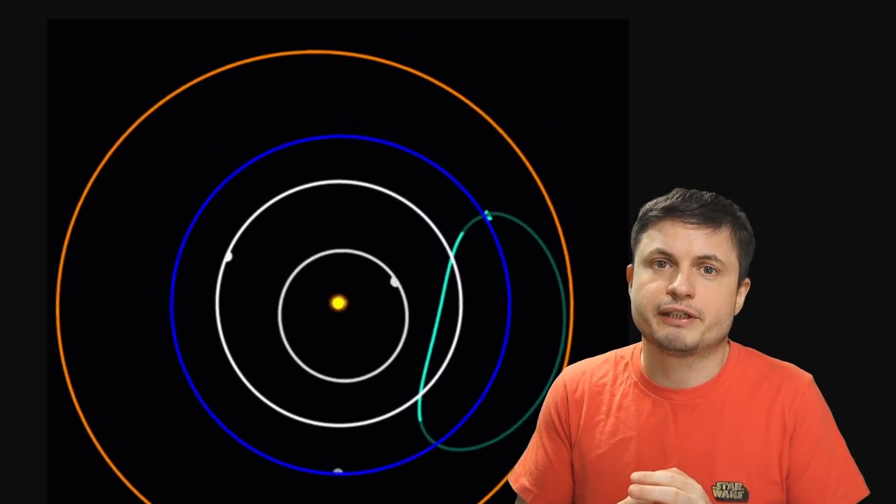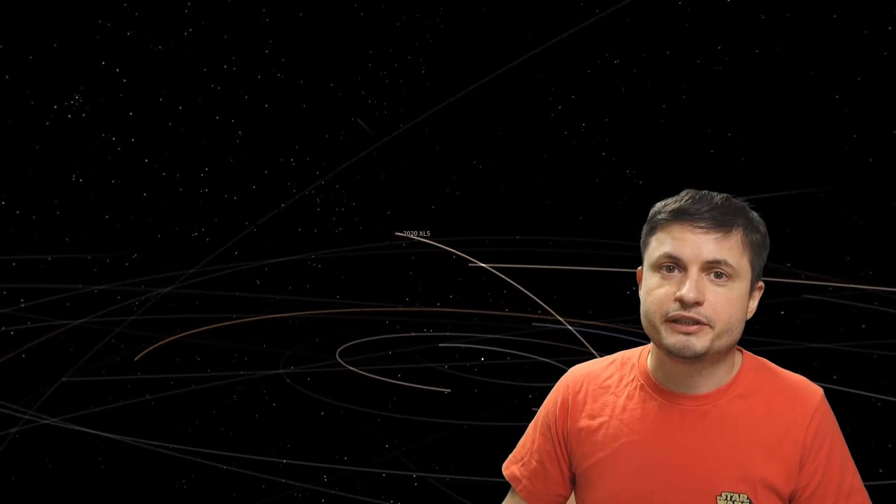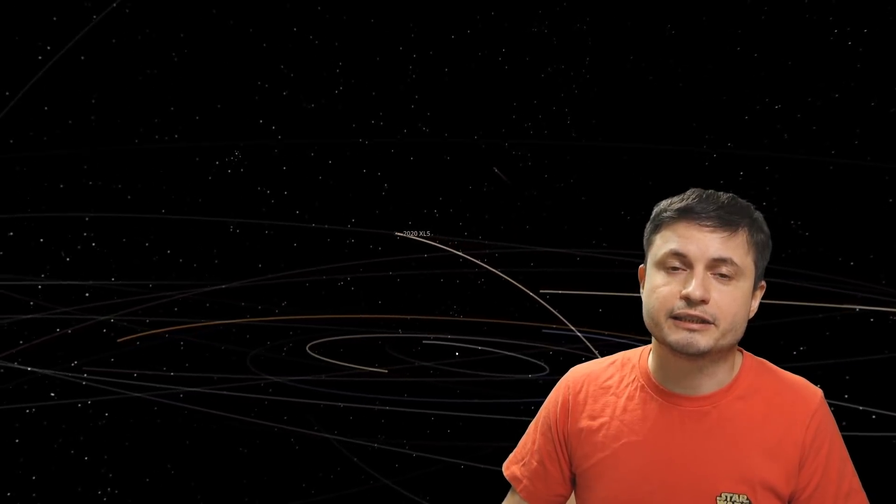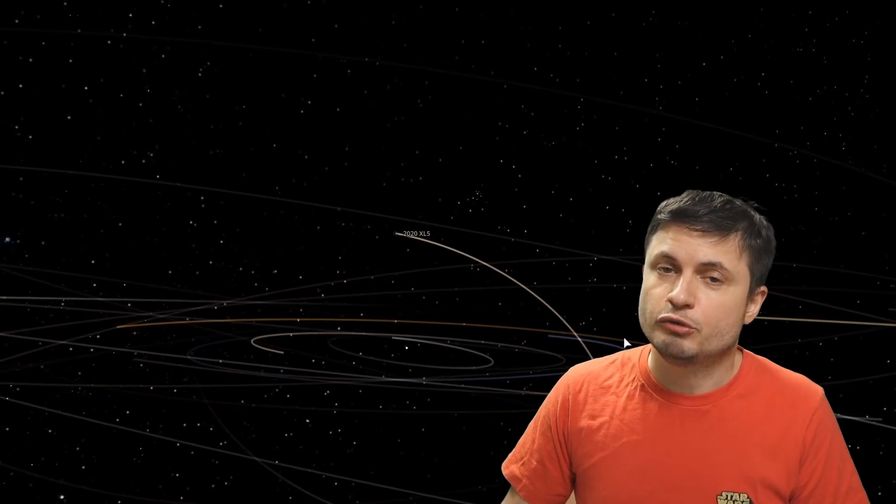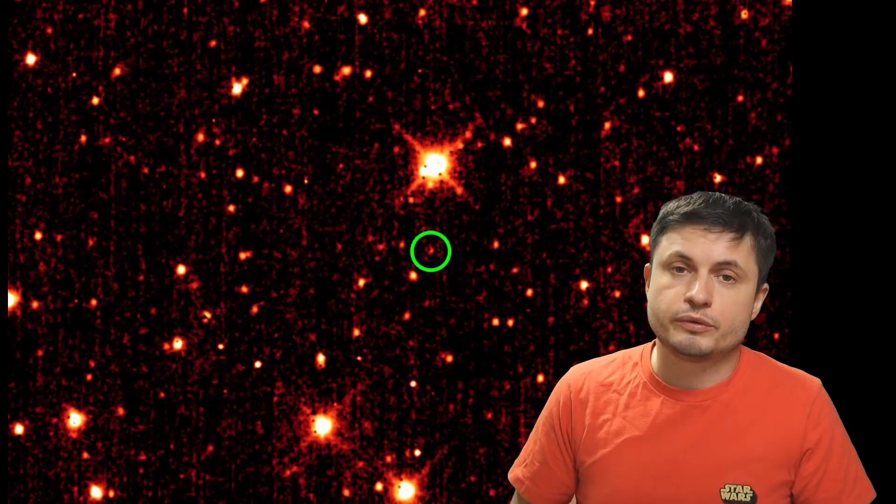Although because these objects have such high inclination, or basically because their orbit is highly inclined to the rest of the solar system, it's somewhat difficult to get to them. For example, for this object right here, to try to reach this, you'd probably need just as much fuel as to reach Jupiter. So in that sense, even though they do share the orbit with planet Earth, because of their inclination, it is kind of difficult to get there.